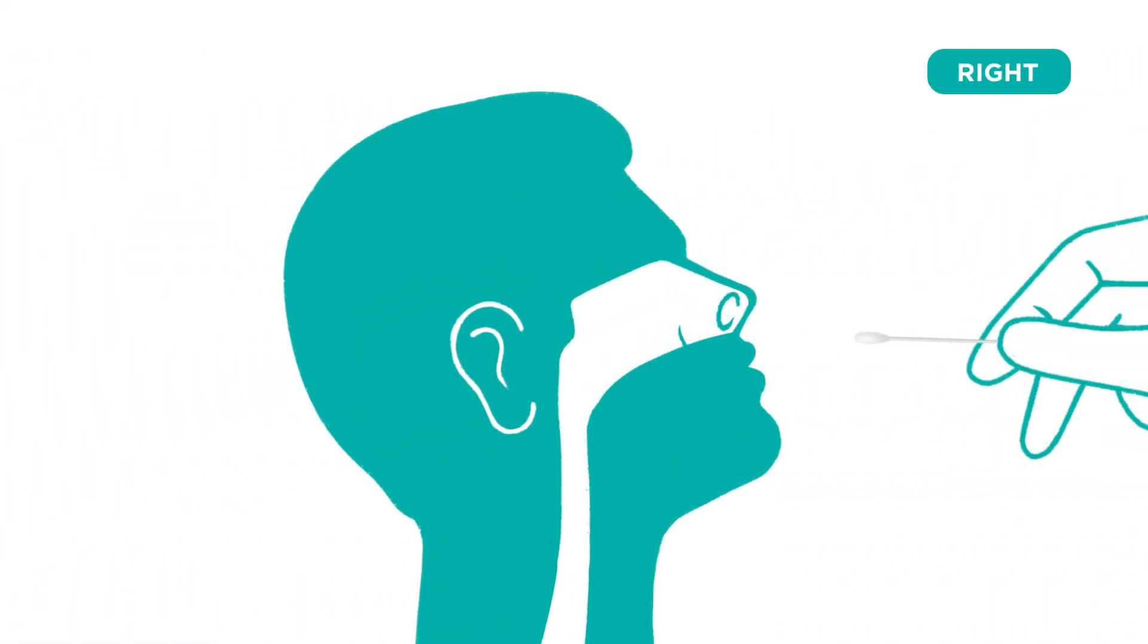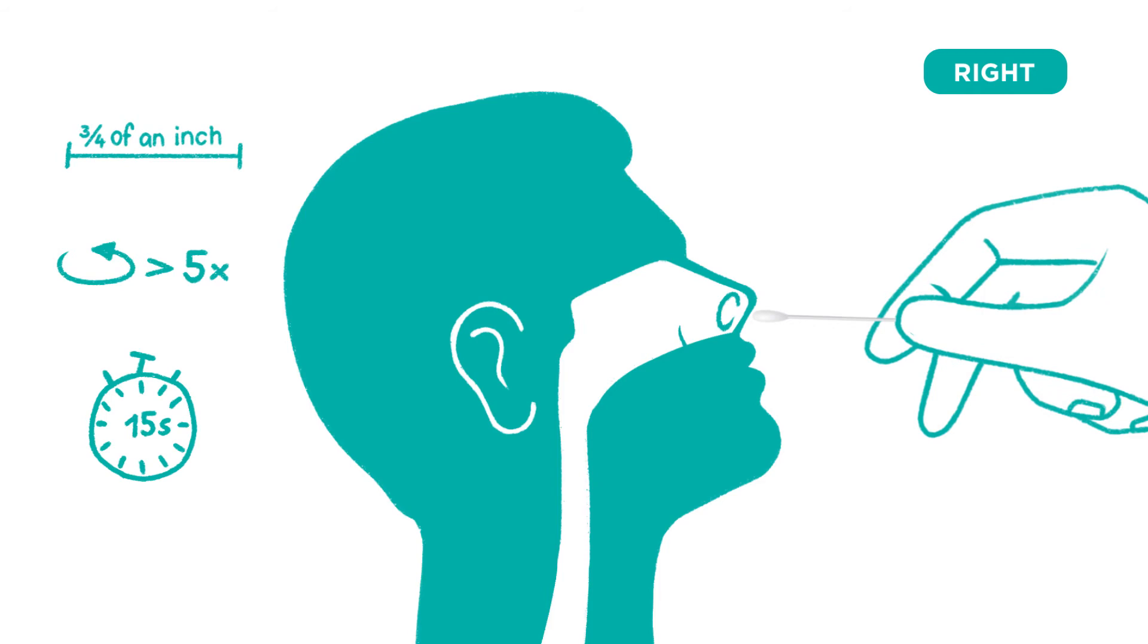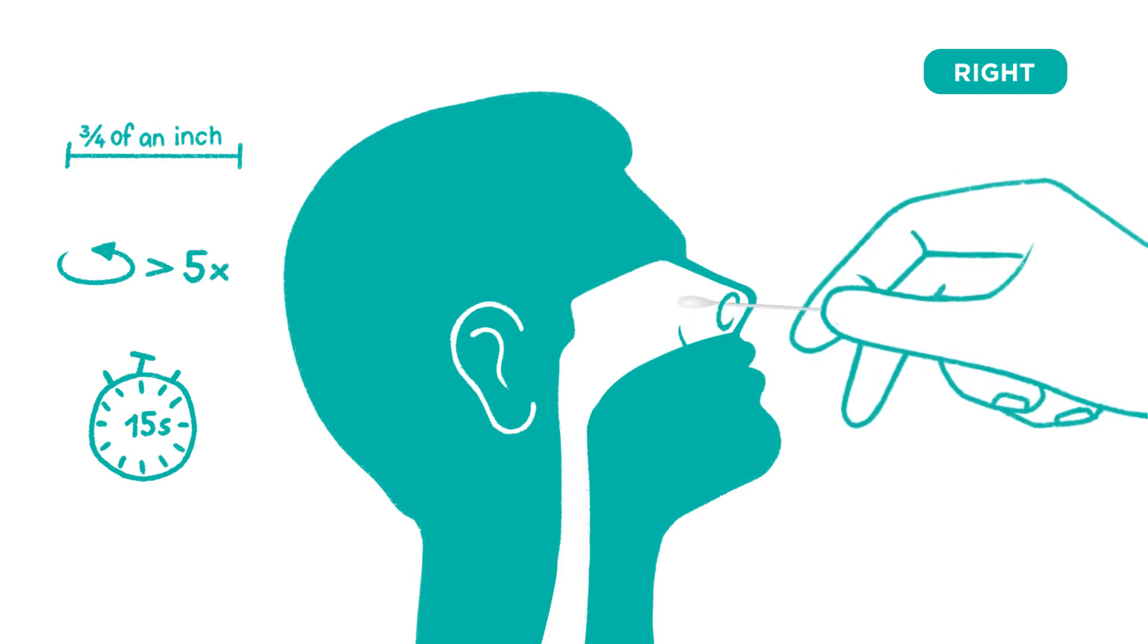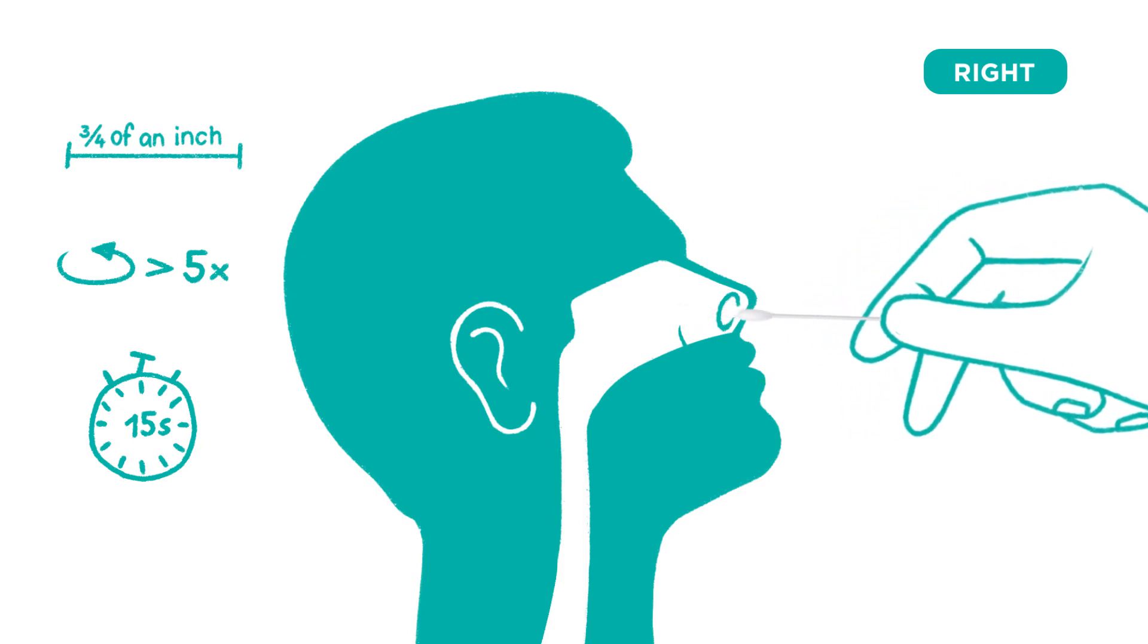Next, place the swab directly into the right nostril, repeating the process of rotating at least five times in a circular path for 15 seconds. Carefully remove the swab from the right nostril.